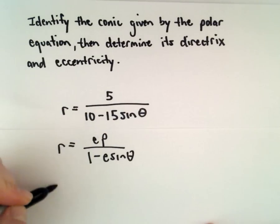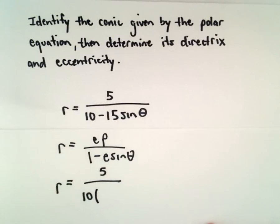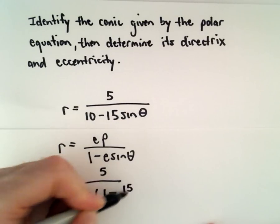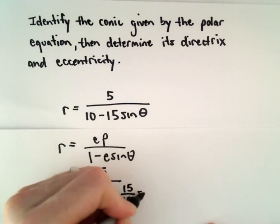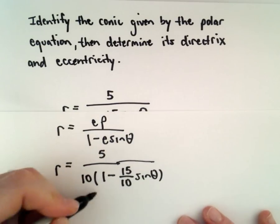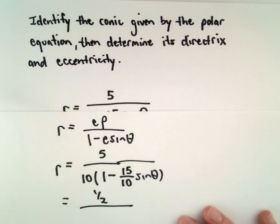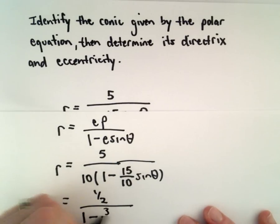To put our equation in that form, we'll factor the 10 out of the denominator. 10 multiplied by negative 15 over 10 would give us negative 15, and we can reduce 5 over 10 to 1 half in the numerator. Then we have 1 minus 3 halves times sine theta.